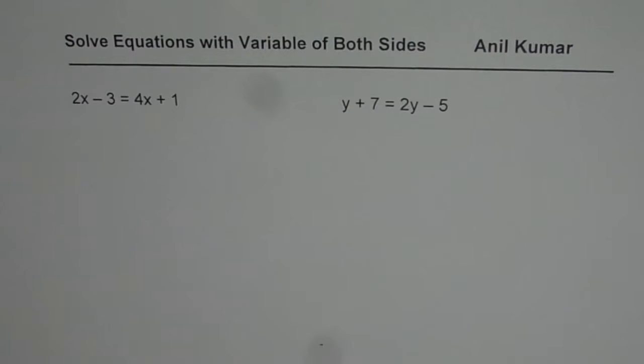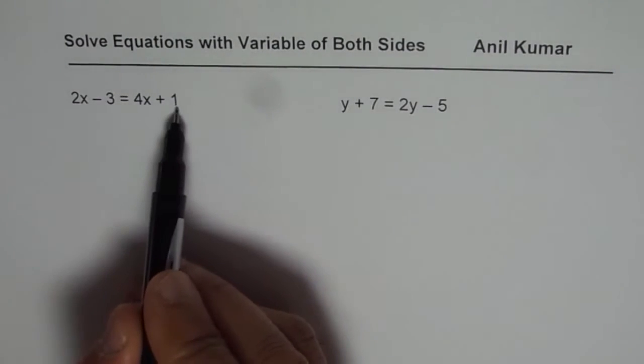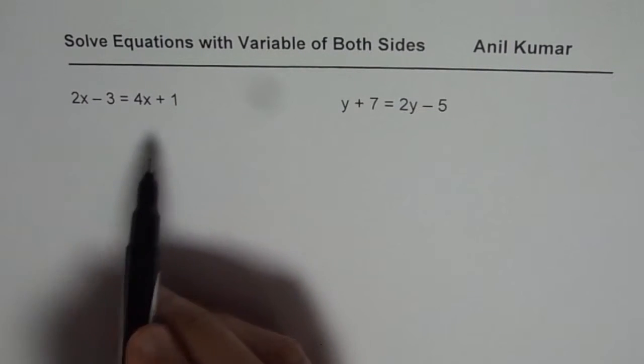I am Anil Kumar and we have equations with variables on both sides, and this time we also have constants on both the sides. Let us see how to solve such equations. Step number one could be we could solve for the numbers and then we could solve for the variables.